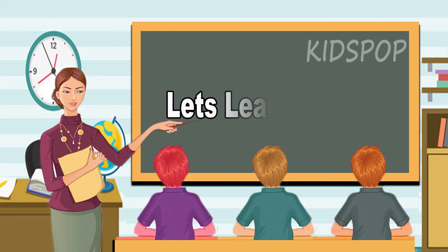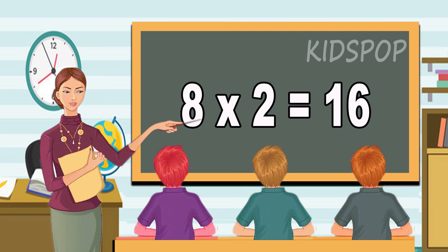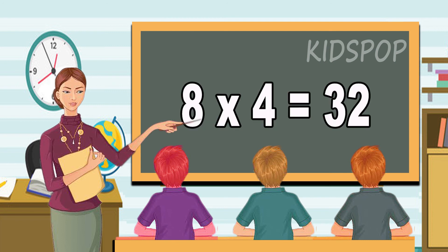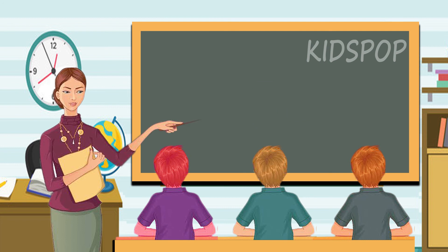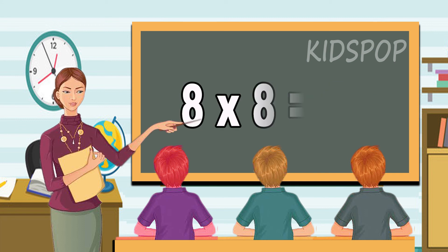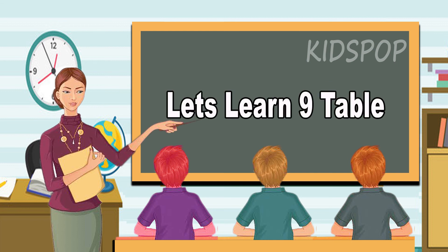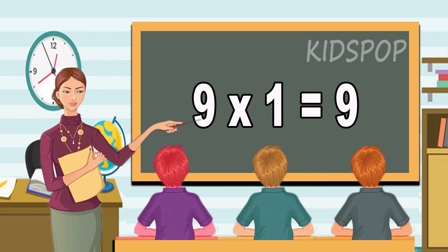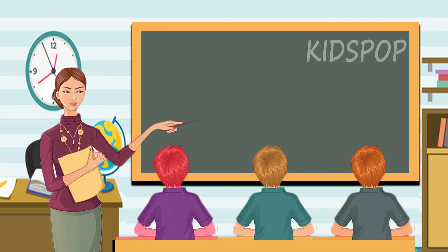Let's learn eight table. Eight ones are eight. Eight twos are sixteen. Eight threes are twenty-four. Eight fours are thirty-two. Eight fives are forty. Eight sixes are forty-eight. Eight sevens are fifty-six. Eight eights are sixty-four. Eight nines are seventy-two. Eight tens are eighty.